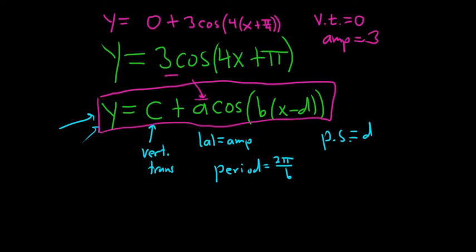What else do we have? The period. The period is 2 pi over b. So here the b is 4. It's right here, so it's 2 pi over 4, which is pi over 2. Because 2 goes into 4 twice and then the phase shift.